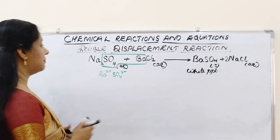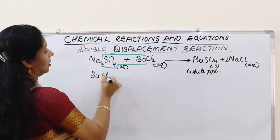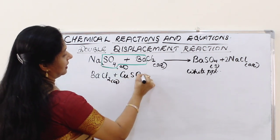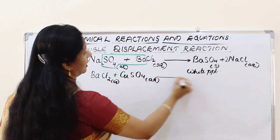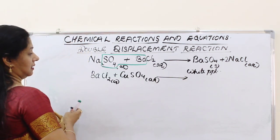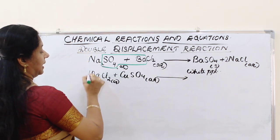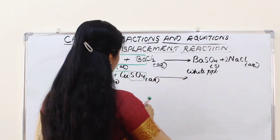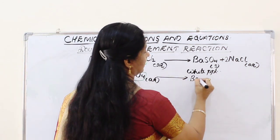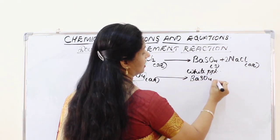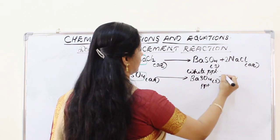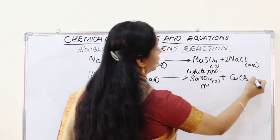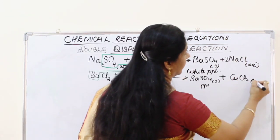Another example: barium chloride (aqueous) reacts with copper sulphate (aqueous). The barium and sulphate ions combine to form barium sulphate as a solid precipitate, and copper chloride (CuCl2, aqueous) is the other product.